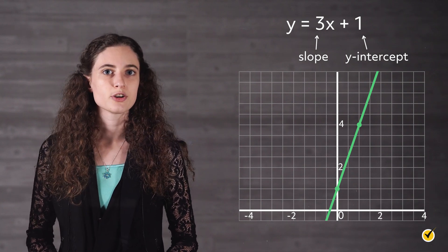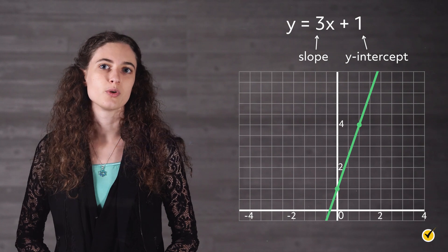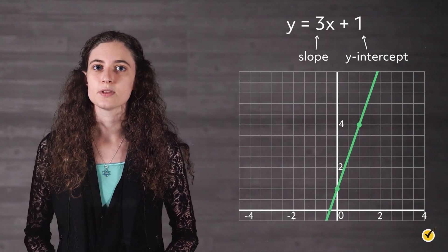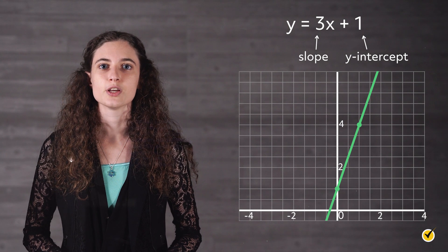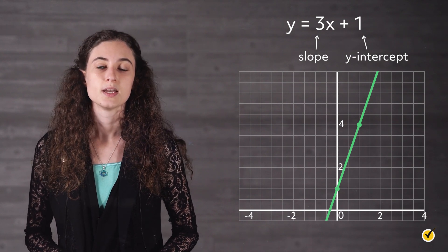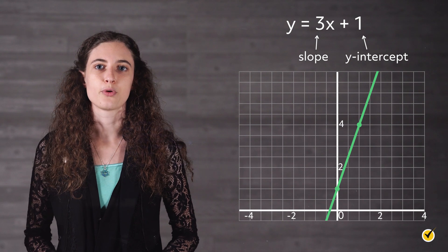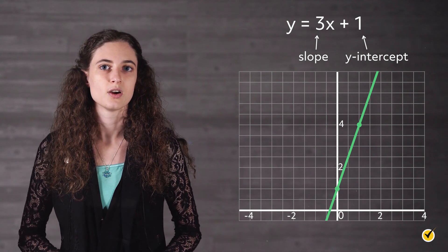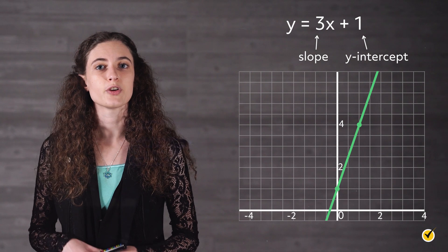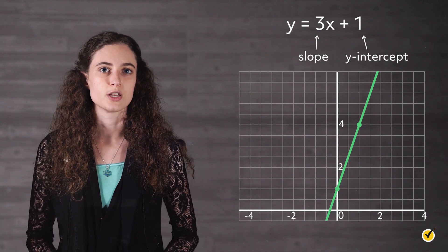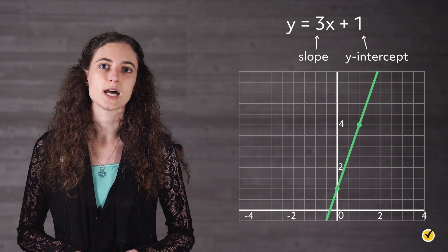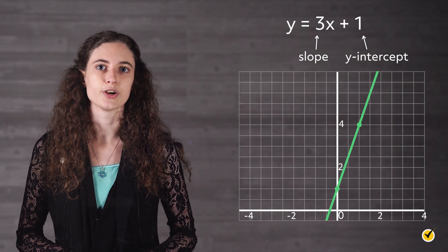However, not all of the linear equations you work with will be conveniently set up this way. Sometimes you will need to manipulate the equation in order to get it into slope-intercept form. This process needs to occur before you can begin graphing. It's important to remember that when solving for variables within a linear equation, the objective is to use inverse operations in order to isolate each variable.